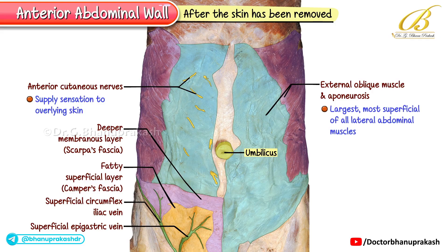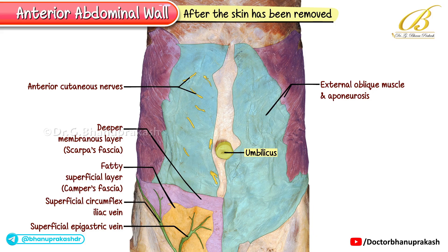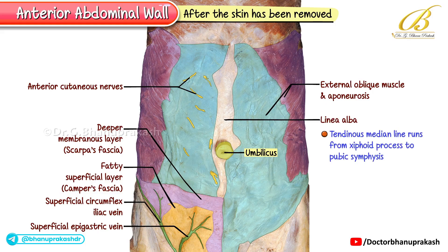In the midline, you can identify two very important landmarks: the umbilicus and the linea alba. The linea alba is a tendinous median line that runs from the xiphoid process above all the way down to the pubic symphysis below. It serves as a central meeting point for the aponeuroses of the abdominal muscles.